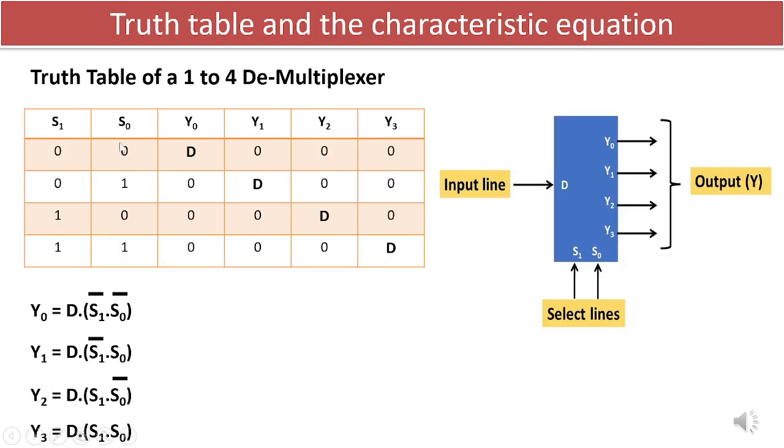By analyzing the truth table, it becomes apparent that only a specific output is active at any given time. However, considering that the data input D can assume either a low or high logic level, and its specific value is not known, we will designate the active output based on the value of D as presented in the truth table.